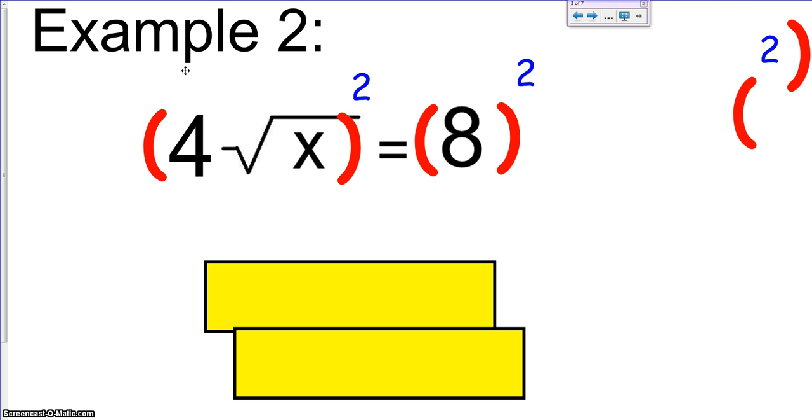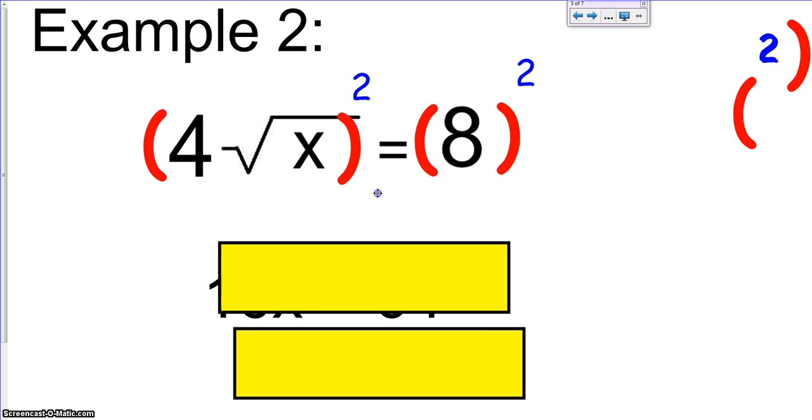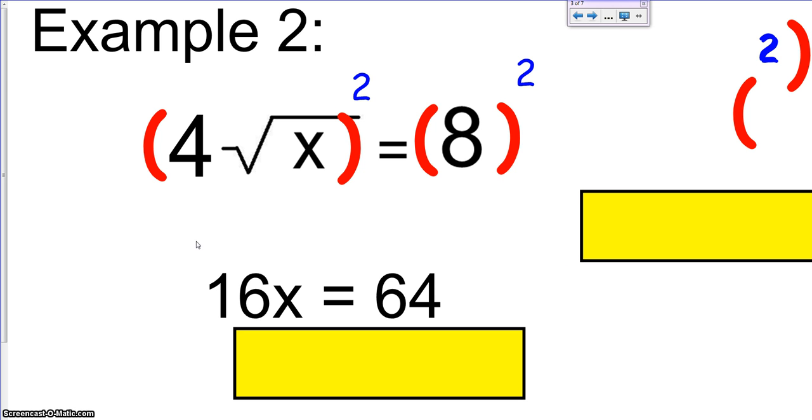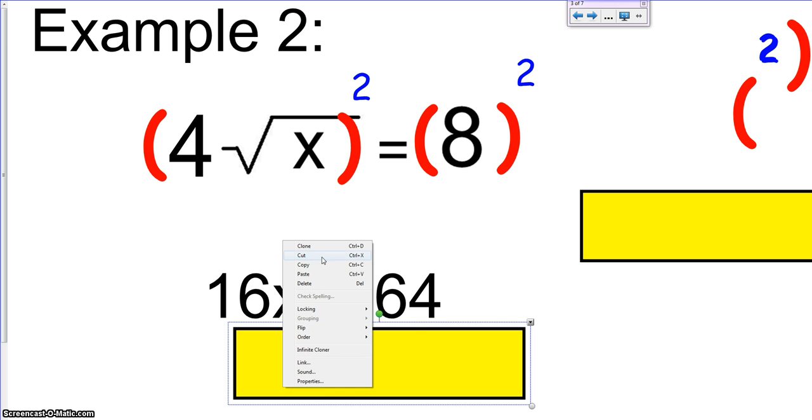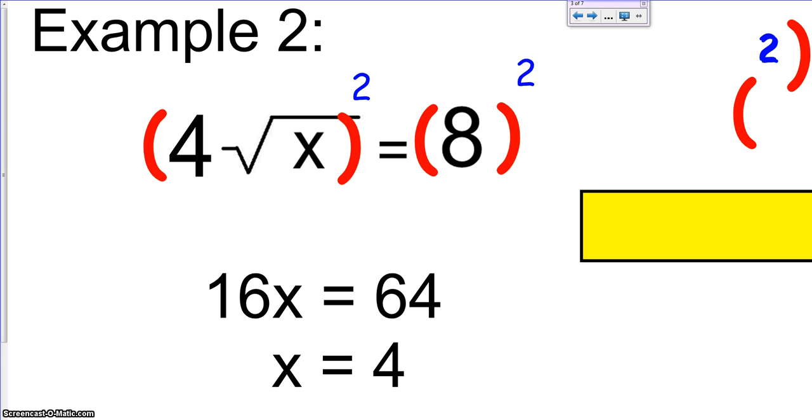We do the same thing that we did the last time, which is we need to put our square symbols. Now, when we square more than one term that's being multiplied, we need to distribute the square. So we need to make sure we have 4 squared. We also need to make sure we have the square root of x squared. When we do that, we're left with 16 times x because 4 squared is 16. The square root of x squared is just x. 8 squared is 64. We just solve it like a one-step equation. We end up with x equals 4.